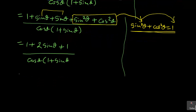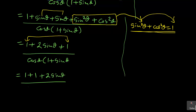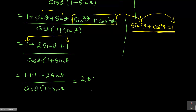You continue — collecting like terms. There are two sin θ terms, so it becomes 2 sin θ. And collecting the two 1s gives 1 + 1, so the numerator is 1 + 1 + 2 sin θ over cos θ · (1 + sin θ). Simplifying 1 + 1 gives 2, so we have 2 + 2 sin θ over cos θ · (1 + sin θ).